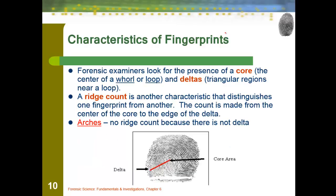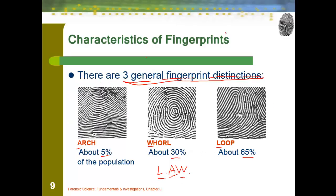When we look at these three, a couple of characteristics to consider. First, the arch: ridges start on one side and move all the way to the opposite side. With loops, they start on one side, some go back and loop around, and end on the same side. With whorls, we get a circular pattern — a closed circuit — where ridges make that circular pattern from beginning to end. That's what determines which of those three patterns we have.